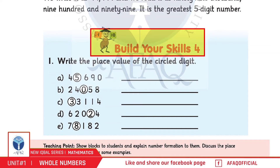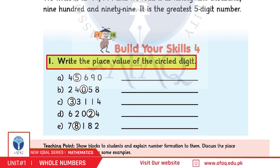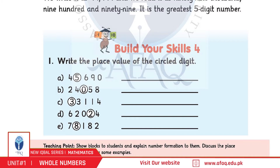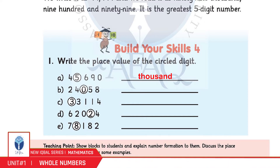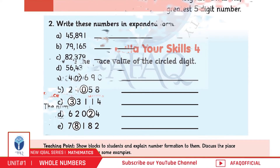Build Your Skills, Page 10. Question 1: Write the place value of the circled digit. A: 5 in 45,690 — 1000 (Thousands). बच्चो, इसी तरीके से अगले parts आपने खुद हल करने हैं।